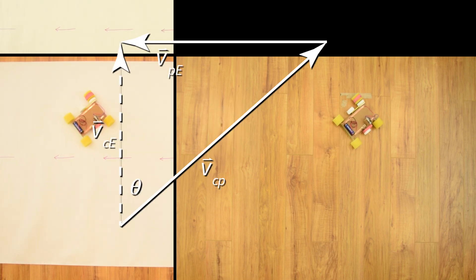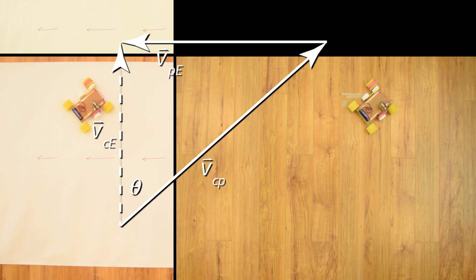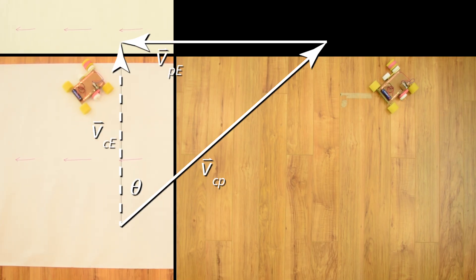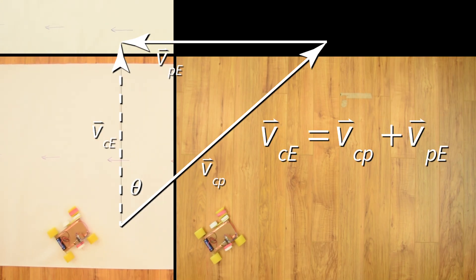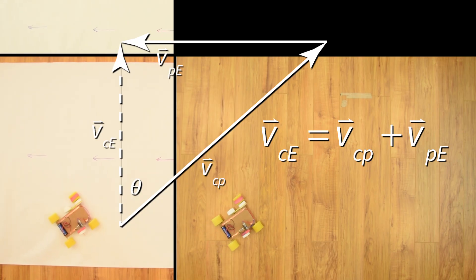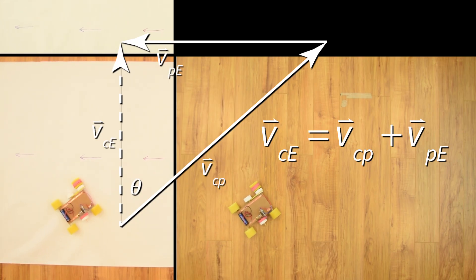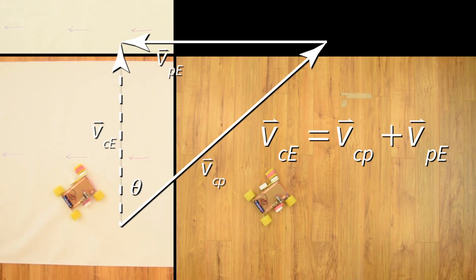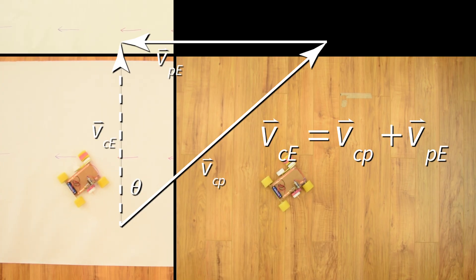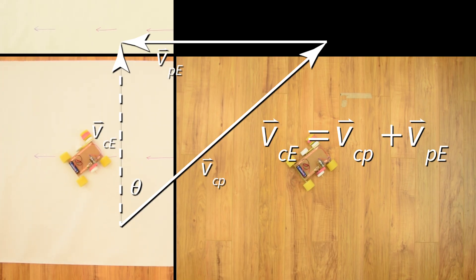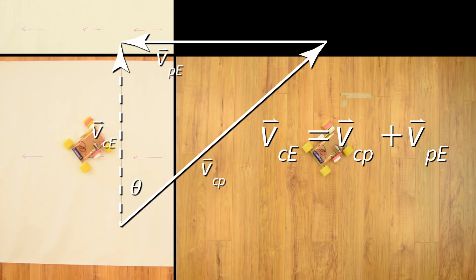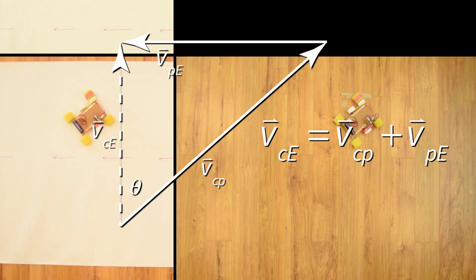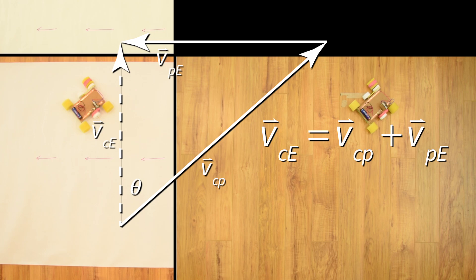Let's now add the tip-to-tail vector addition diagram. This gives us the equation: the velocity of the car with respect to the paper plus the velocity of the paper with respect to the earth equals the velocity of the car with respect to the earth. This is the same equation we had for our first two relative motion problems. But notice that the velocity of the car with respect to the earth is no longer the hypotenuse of the triangle, which has a tendency to confuse people.